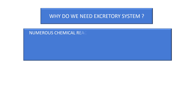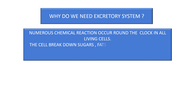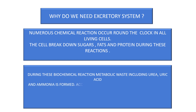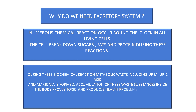Why do we need the excretory system? Numerous chemical reactions occur around the clock in all living cells. The cells break down sugars, fat, and protein during these reactions. During these biochemical reactions, metabolic waste including urea, uric acid, and ammonia is formed. Accumulation of these waste substances inside the body proves toxic and produces health problems. If allowed to accumulate to a certain level, it causes death.